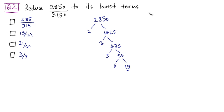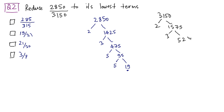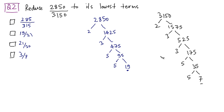Now the prime factors of 3150. It is divisible by 2: 3150 divided by 2 gives us 1575. 1575 is not divisible by 2 but is divisible by 3, giving us 525. 525 is also divisible by 3: 3 times 175 is 525. 175 is divisible by 5: 5 times 35 is 175, and 35 is 5 times 7. 7 is a prime number, so we stop.